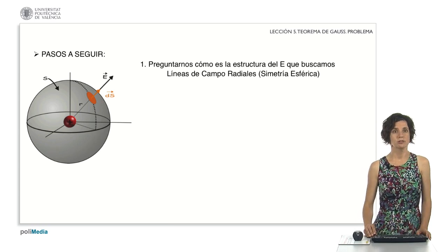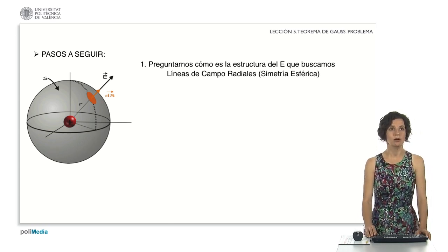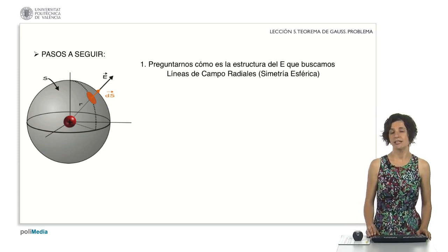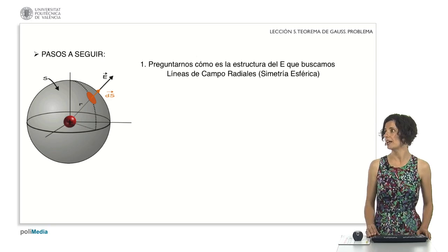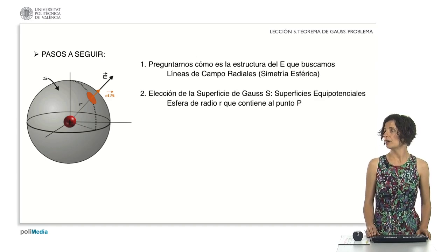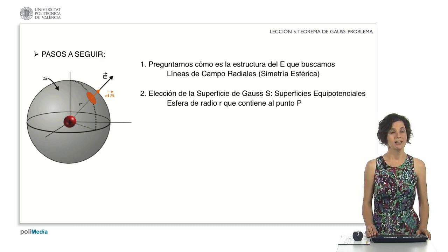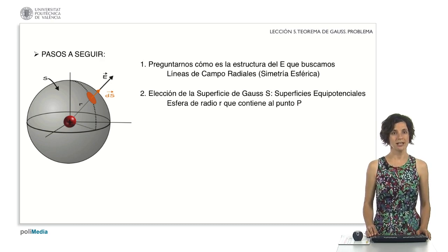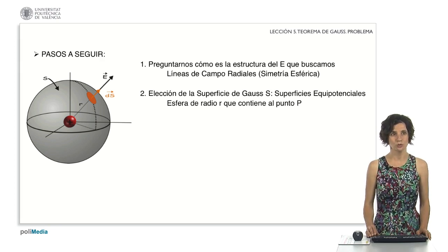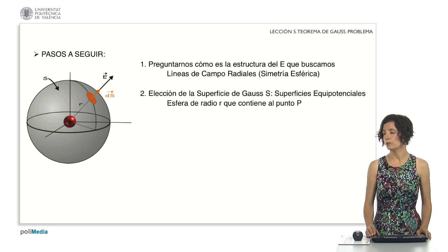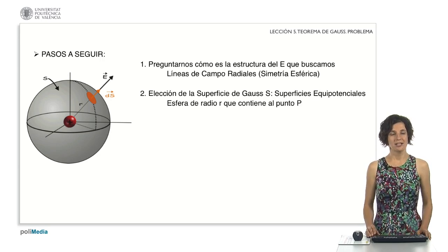Let's start with the first step. The field lines created by a positive point charge are radial, since it has spherical symmetry. Next, we choose a suitable Gaussian surface — an equipotential surface. Remember that equipotential surfaces are those to which the electric field is perpendicular at all points. Since the electric field is radial, we choose as our Gaussian surface a sphere of radius r containing the point P where we want to calculate the field.